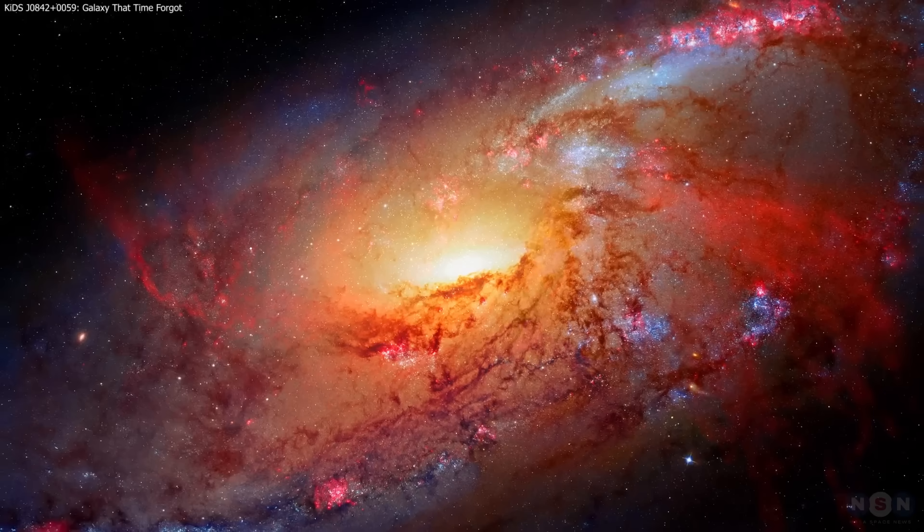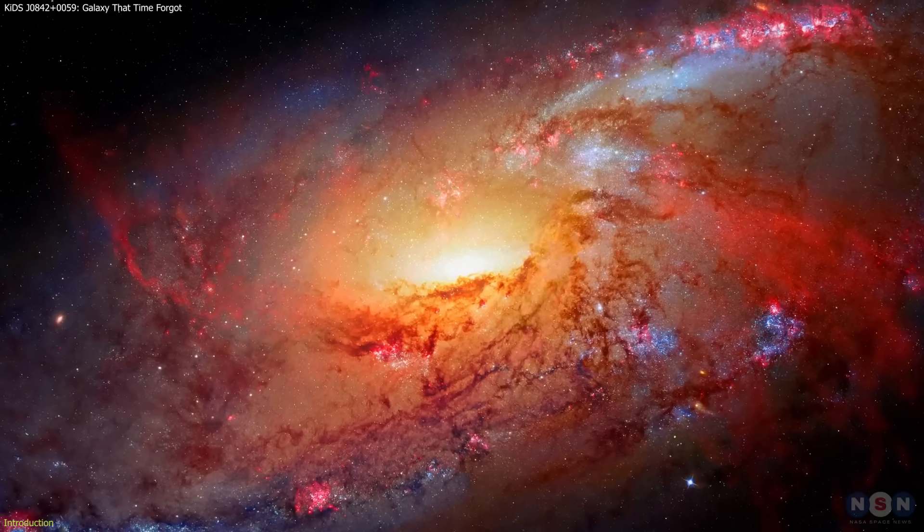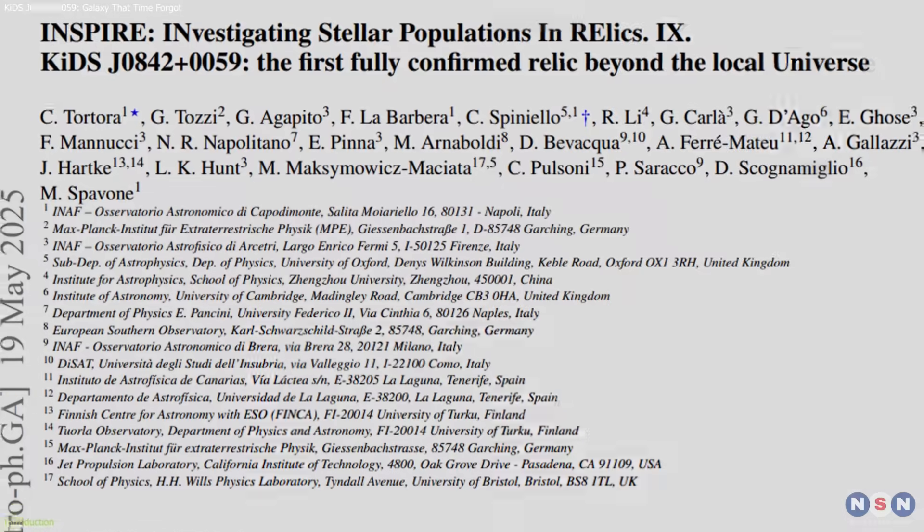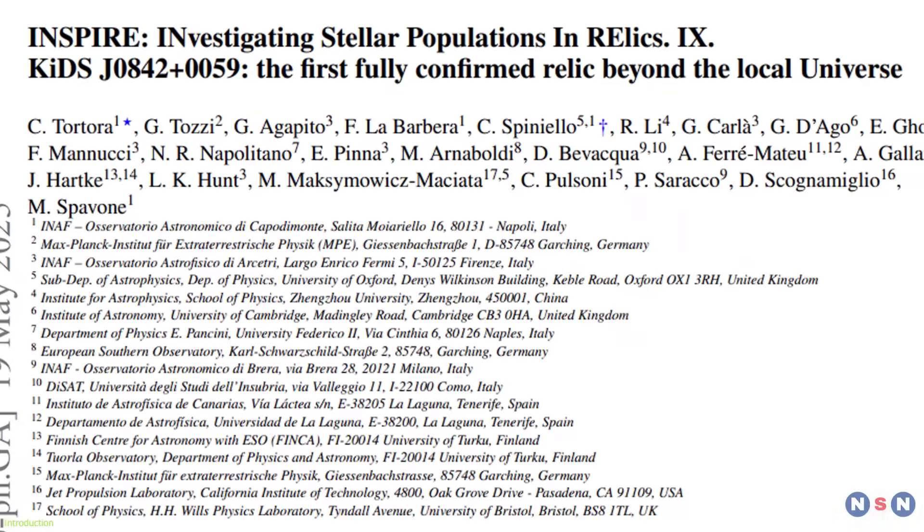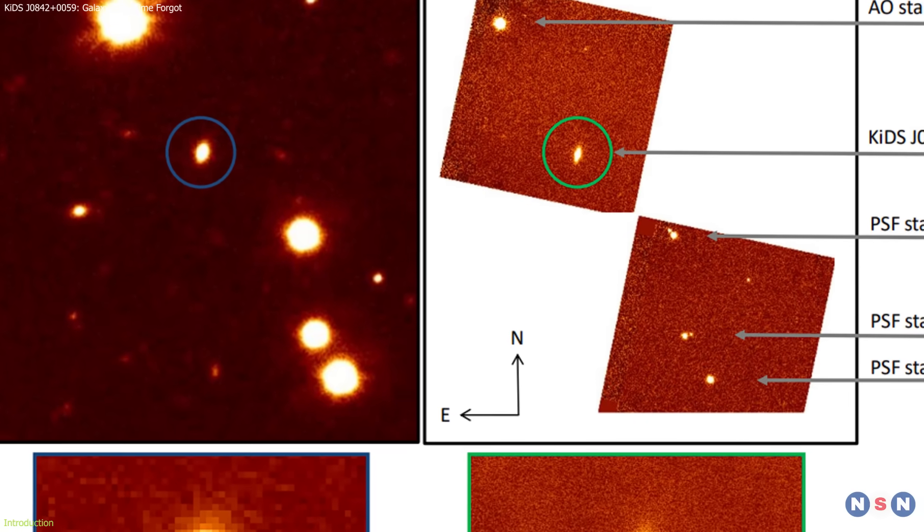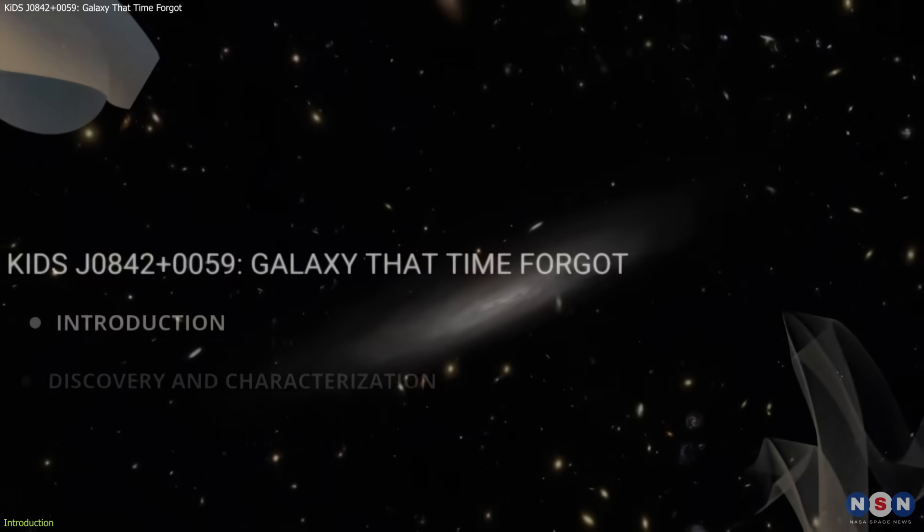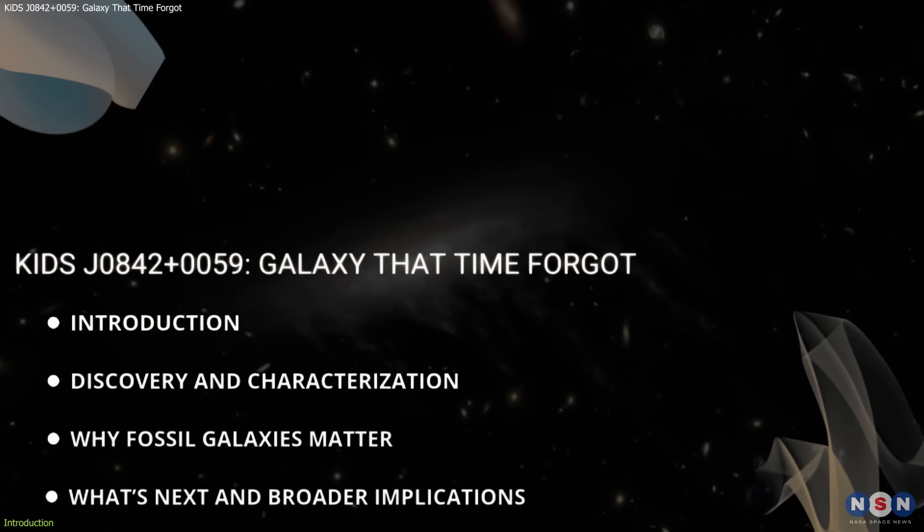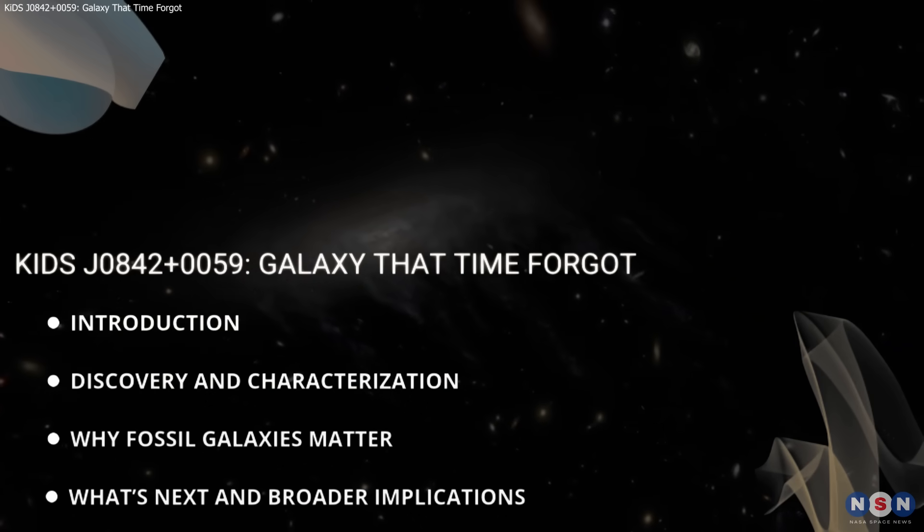Astronomers have confirmed the existence of a galaxy that has remained virtually unchanged for more than 7 billion years. Known as KIDS J0842+0059, this system is what researchers refer to as a fossil galaxy, a relic from the early universe that has avoided the collisions and interactions that typically reshape galaxies over cosmic time.